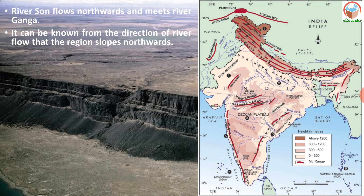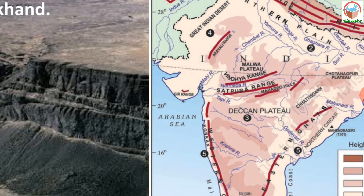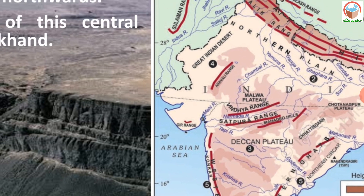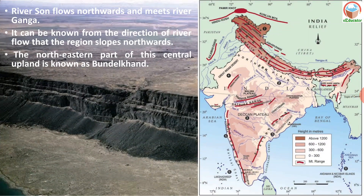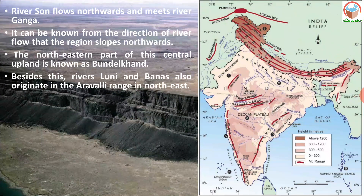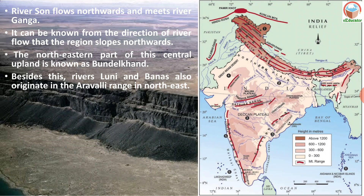The slope of the Malwa Plateau is northward. The northeastern part of the central upland is known as Bundelkhand, which is mostly in the Madhya Pradesh area. The rivers Luni and Banas also originate from the Aravalli ranges and flow in the northeast direction, eventually vanishing into the Rann of Kutch.